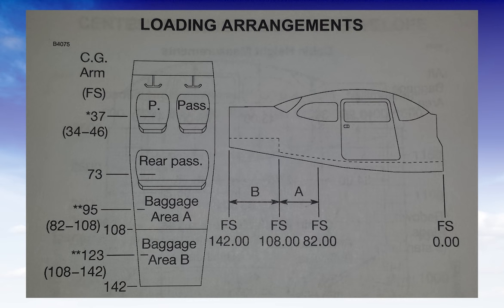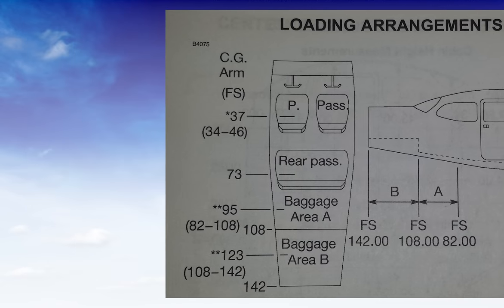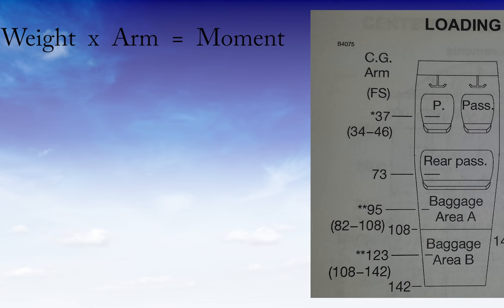So now we can go ahead and use our loading arrangements page to do it the harder way. Basically where we're going to multiply the weight times the arm to find our moment and then go ahead and divide all that. So slightly more math. I actually prefer this way. I don't think it's harder. I think I get to see all of the math myself and I make sure I'm getting the exact numbers. So we can see here, they give us a range for the pilot and front passenger, 34 to 46. We're going to use the average, which is 37. Rear passengers, they give us the number 73. So these are all pre-measured distances. We don't actually have to go out to the aircraft with the tape measure and measure from the firewall or from the datum point back to the station where we're putting the weight.